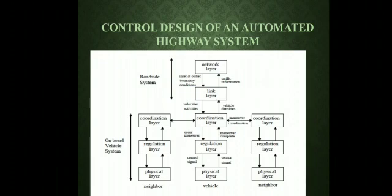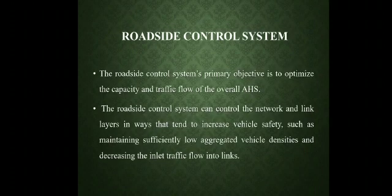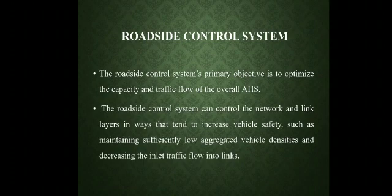The onboard vehicle control system is the overall control system that comprises controls for the coordination, regulation, and physical layers. Its primary objective is to safely control the vehicle while efficiently executing its activity plans, meaning the vehicle should not collide under normal circumstances. The roadside control system's primary objective is to optimize the capacity and traffic flow of the overall automated highway system. It controls the network and link layers to increase vehicle safety, such as maintaining sufficiently low aggregate vehicle density and decreasing inlet traffic flow into the link.